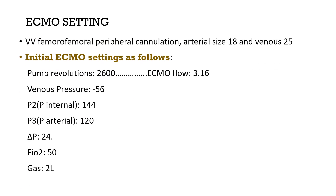ECMO settings: the patient is on VV ECMO with FEMFEM cannulation configuration. Arterial cannula size is 18Fr, venous cannula size is 25Fr. Initial ECMO settings: RPM 2600, ECMO flow 3.16 L/min, venous pressure minus 50, P1 is 145, P2 is 120, delta P is 24, FiO2 50%, and sweep gas 2 liters.